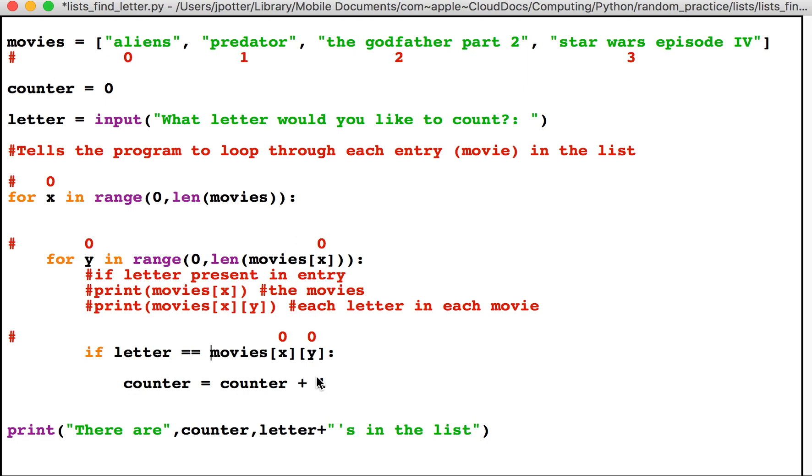So because 'a' is in there, the counter will go up by one. Now this internal loop here will end once it gets to the end of 'aliens'. There's no more a's, so this now ends and it goes back to this loop, the outer loop, and x now becomes one.